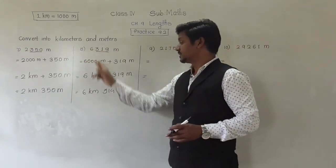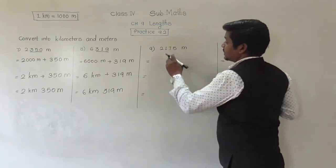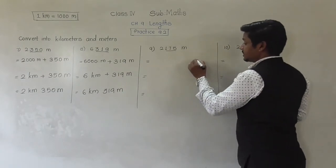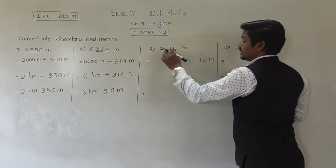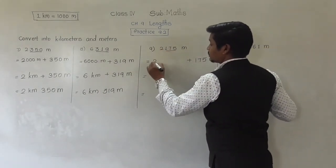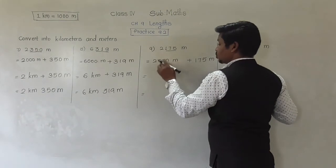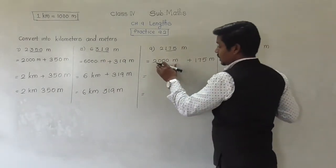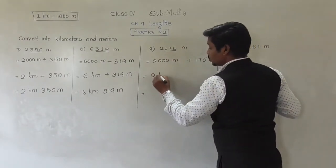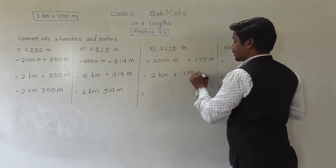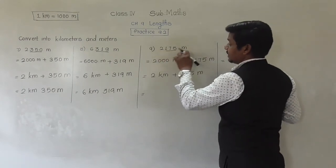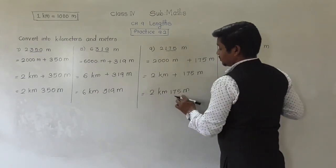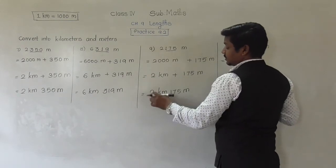We have converted all meters into kilometers and meters. Next: 2,175 meters. Underline the last three digits: 175 meters. The digit at the thousands place is 2, that is 2,000 meters. So 2,000 meters plus 175 meters equals 2,175 meters. Since 2,000 meters makes 2 kilometers, 2,175 meters equals 2 kilometers 175 meters.